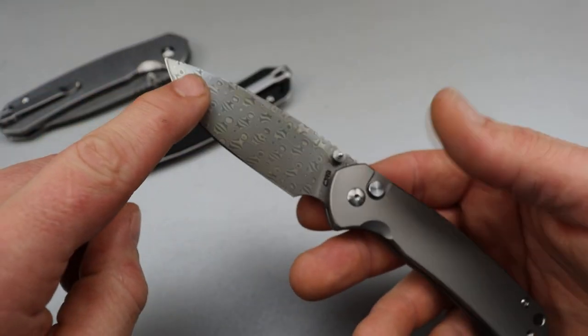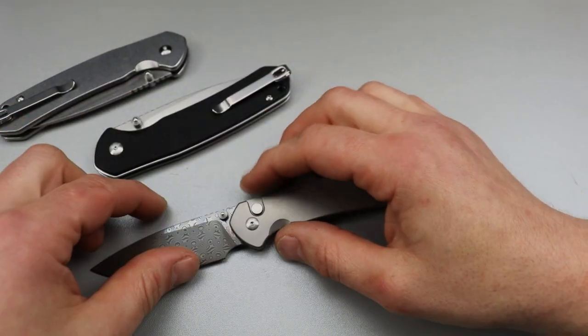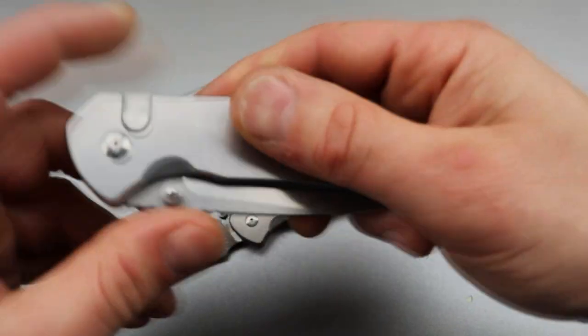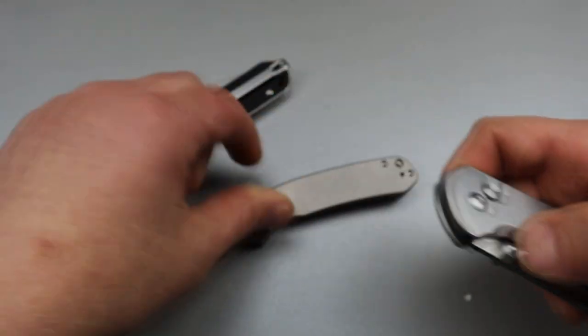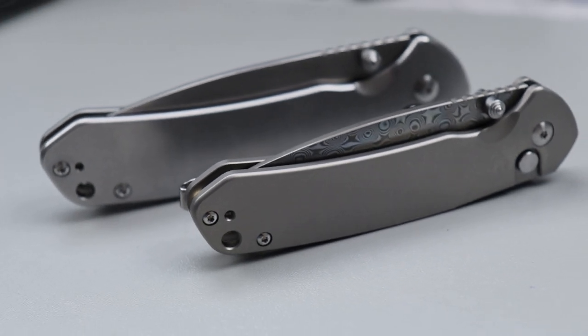Now, this one's a titanium one with Damascus. So this one's quite a bit more expensive. But you can get this exact same version just like this one where it's just raw for like $50, $60, something like that.